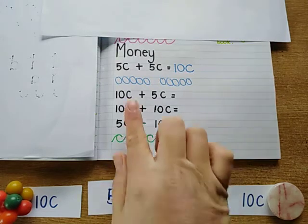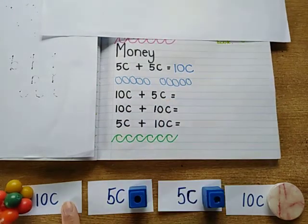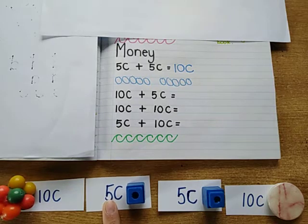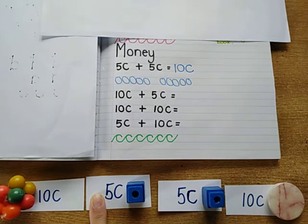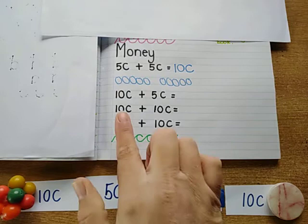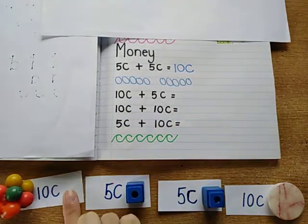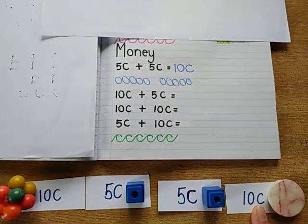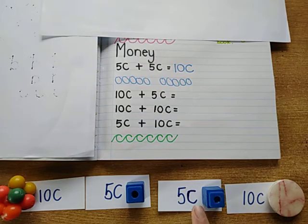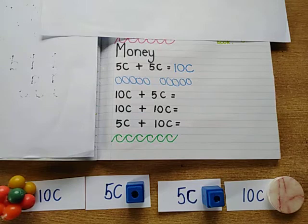And then we've got 10 cent plus 5 cent. So maybe you've bought this crazy ball and one of the blocks. What would they cost if you put them together? And then there's 10 cent plus 10 cent. So crazy ball plus this beautiful shiny thing. And then the last one is one of the blocks plus one of the shiny goodies there. And then you can work out the answers.